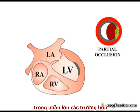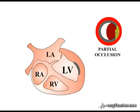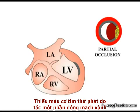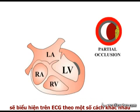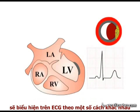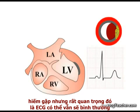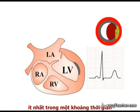In the great majority of these cases, this does not result in ST segment elevation on the ECG. Myocardial ischemia secondary to partial occlusion of a coronary arterial vessel manifests on the ECG in a number of different ways. Rarely, but importantly, the ECG may remain normal, at least for a time.